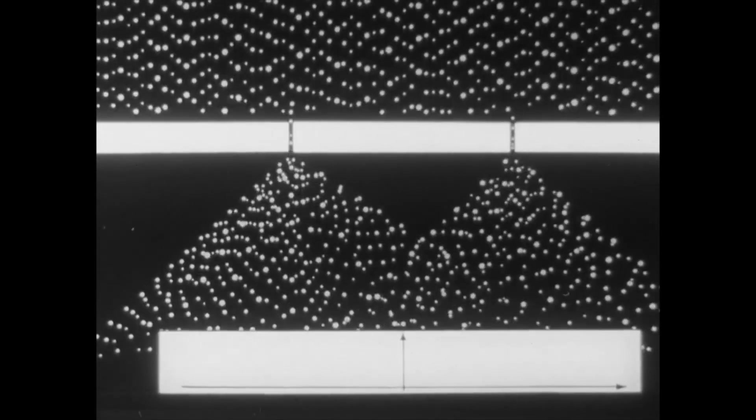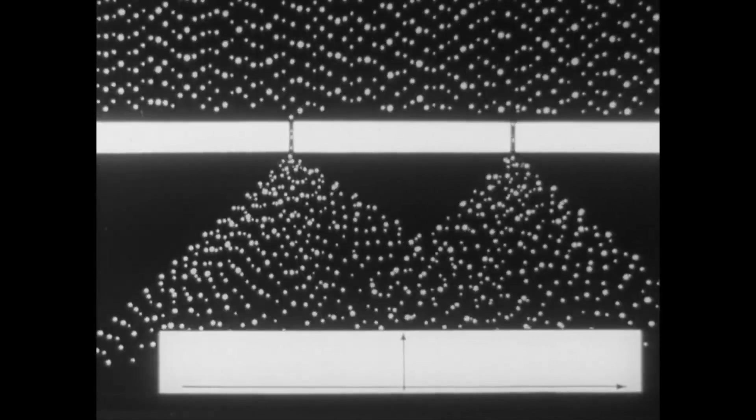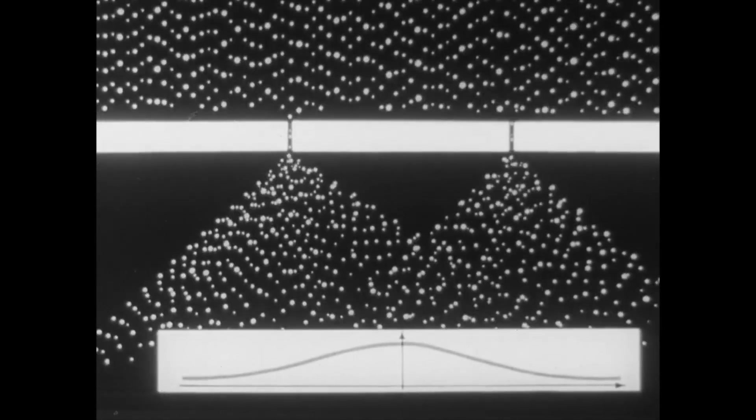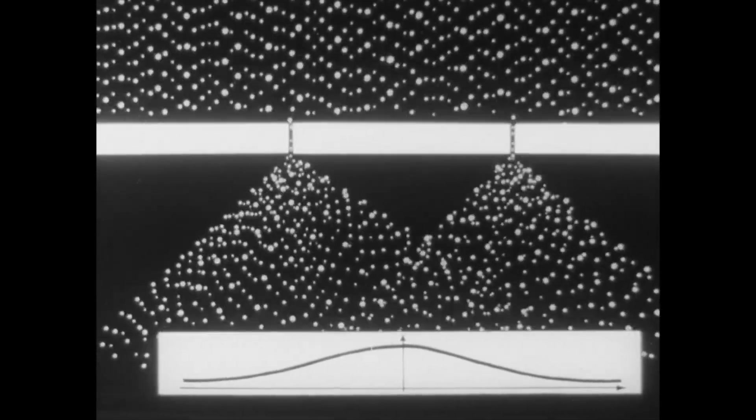If instead of waves, beams of particles fall on the screen from the slits, then according to classical theory, a smooth distribution of intensity with a single maximum is expected on the screen.